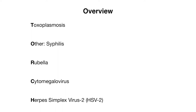The T stands for toxoplasmosis, O is other and includes syphilis, R stands for rubella, C for cytomegalovirus or CMV, and H is for herpes simplex virus 2 or HSV2.